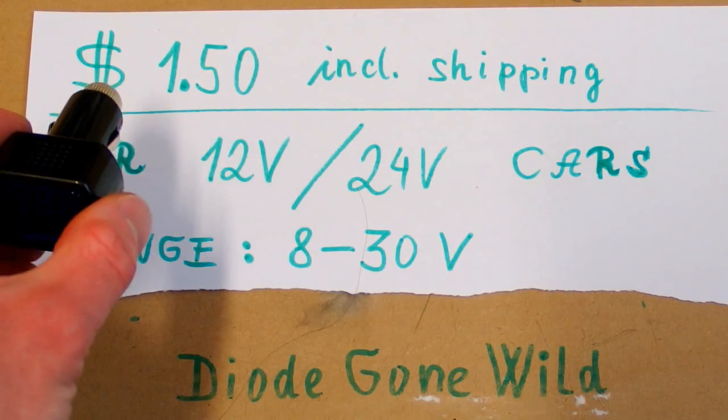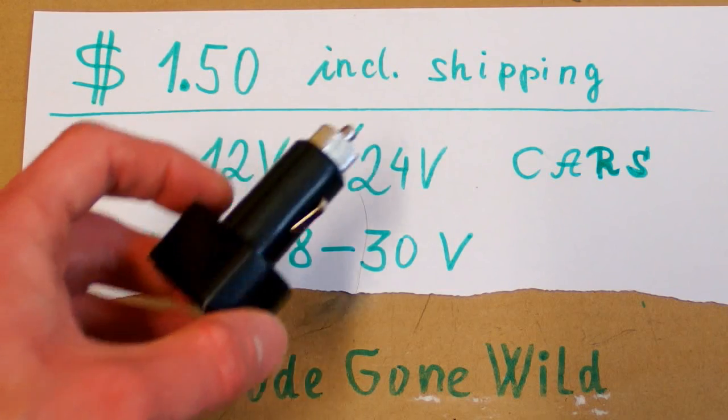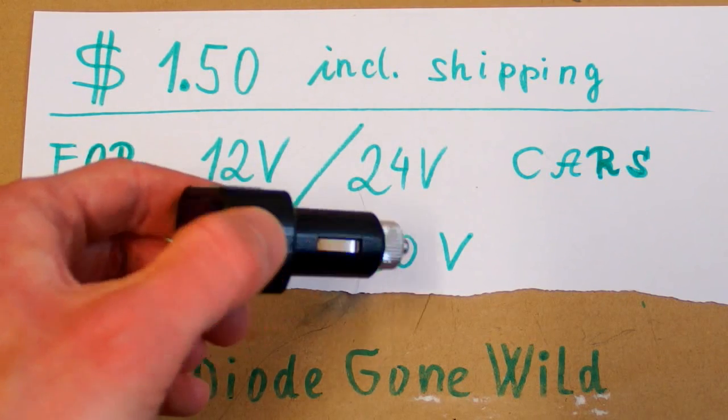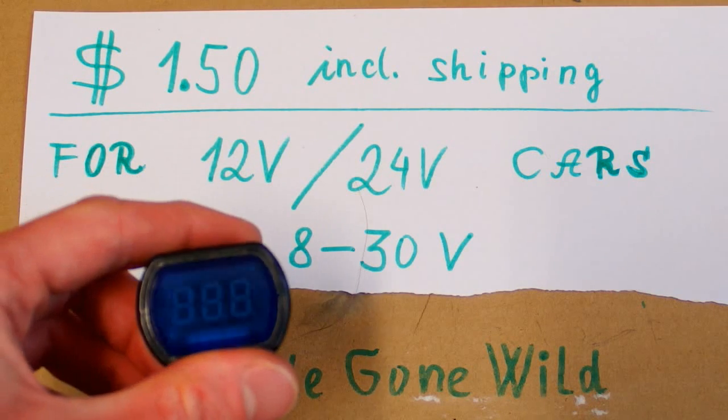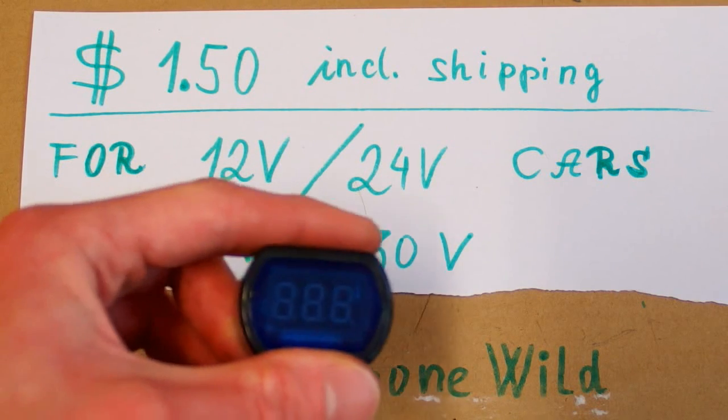It comes from eBay. It cost me only $1.50. It's for both 12 and 24-volt cars and according to the listing the range of voltage measurement is from 8 volts to 30 volts.